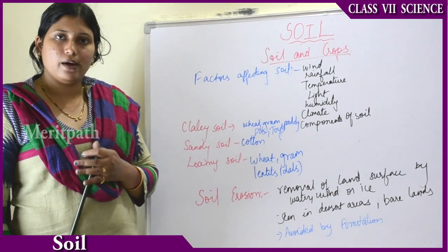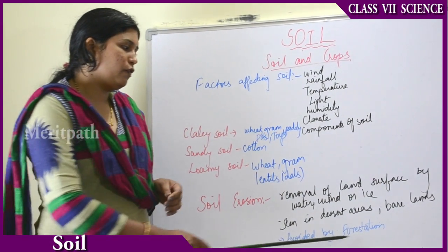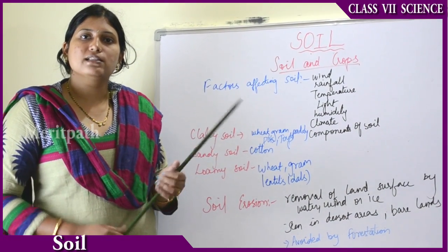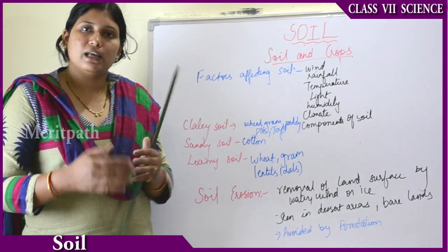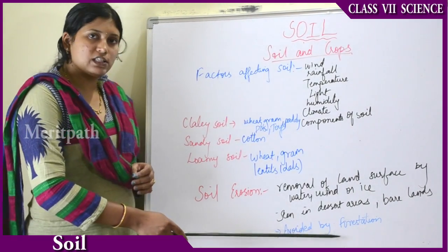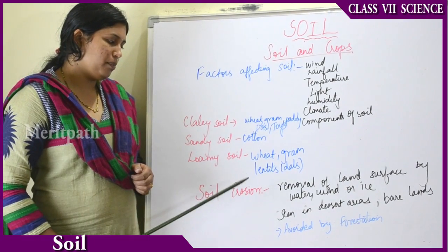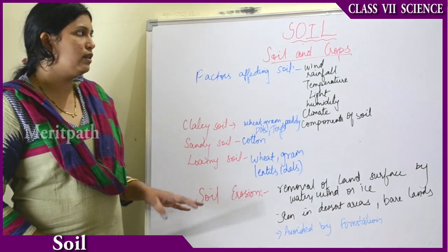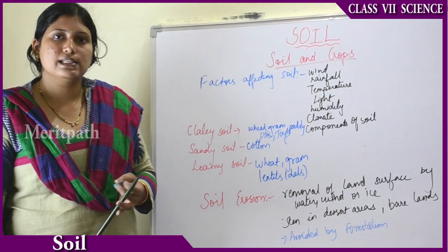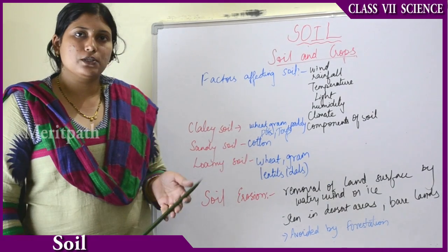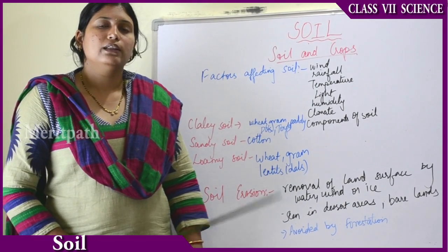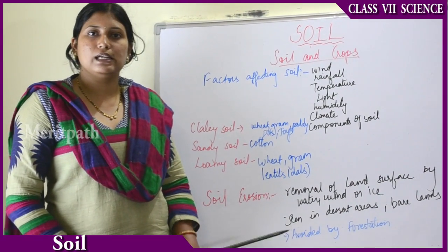Soil erosion can be avoided by forestation — growing more green areas and green lands. If there are plants, there will be water holding capacity and exchange of water between the plant and the soil. By growing more forests and green land areas, soil erosion can be avoided. To conclude this chapter: you have understood the types of soils, properties of soils, types of crops grown in different soils, classifications of soils, and the layers of soil.